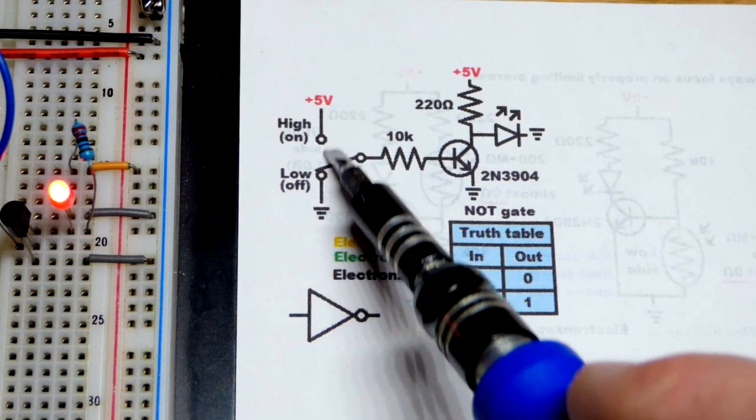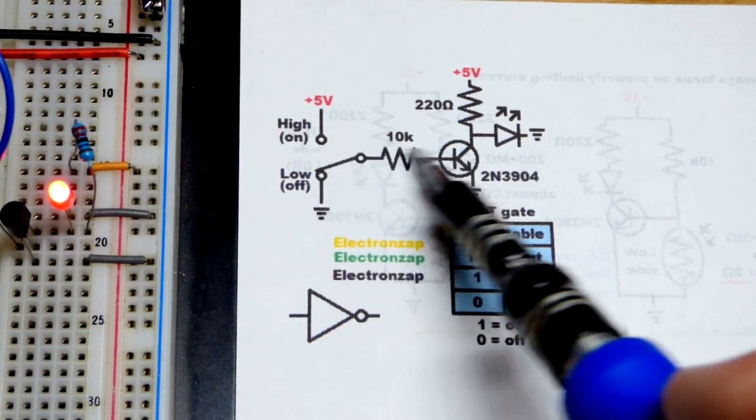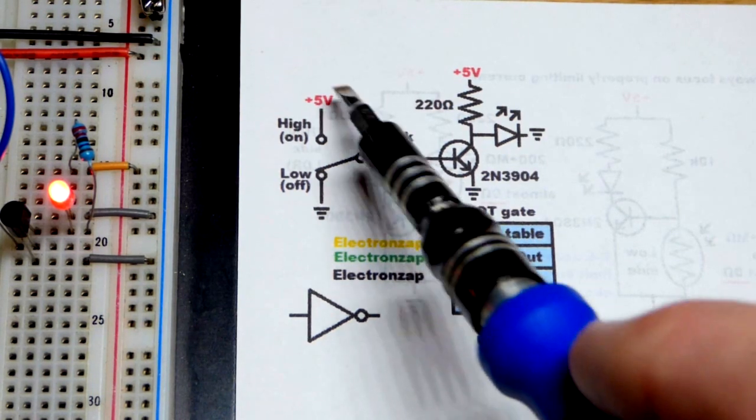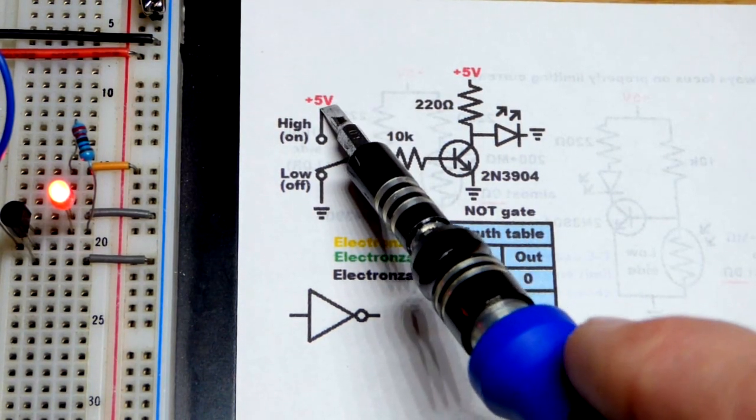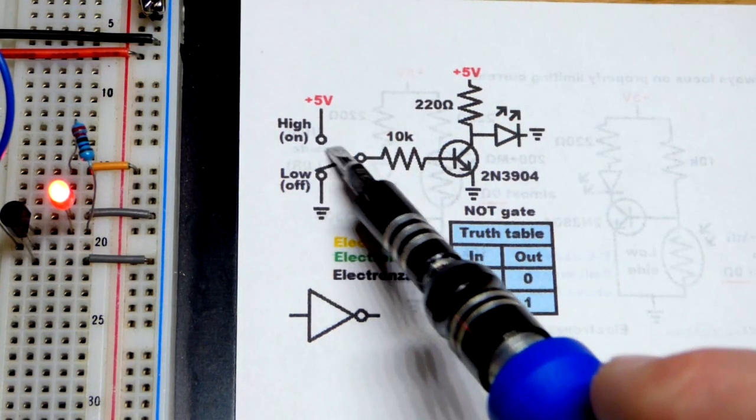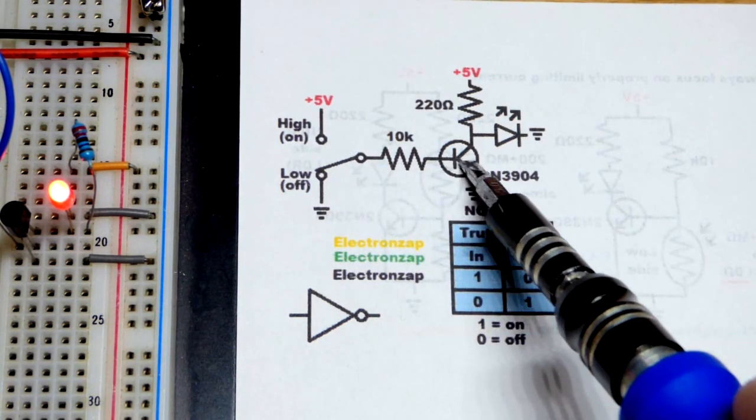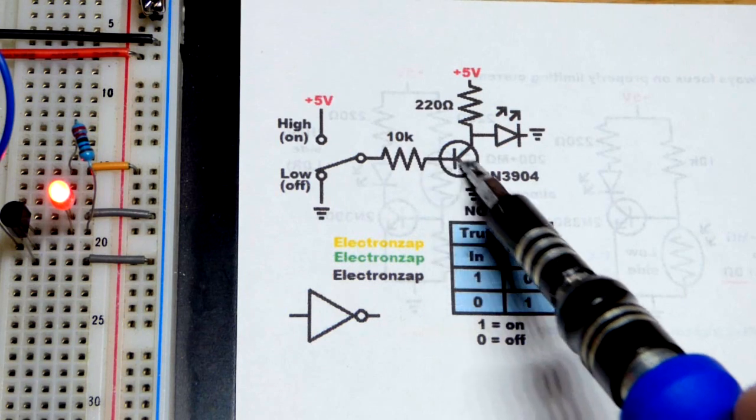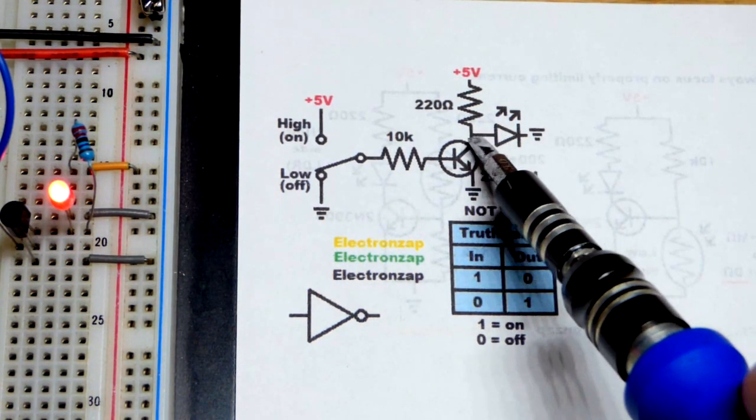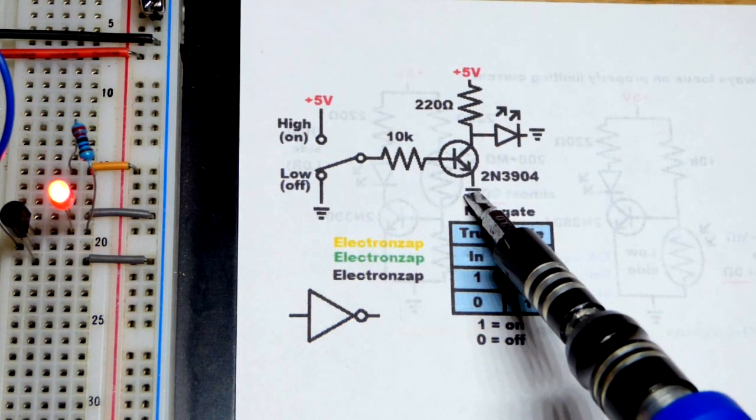Now if we flip the switch so that from the base through a 10 kiloohm resistor, we have 5 volts. The 10 kiloohm resistor will limit current. Current will go through base to emitter. A small base-to-emitter current allows many times—probably hundreds of times—the current to go from collector to emitter.